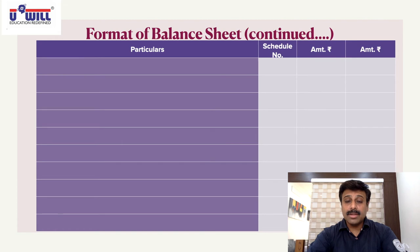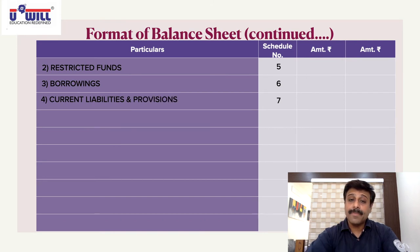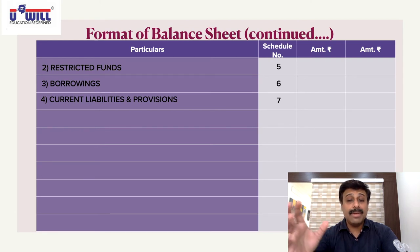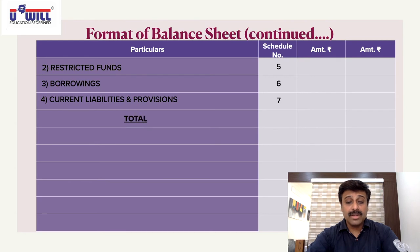After unrestricted funds, we have restricted funds (Schedule 5), borrowings (Schedule 6) — which include secured and unsecured loans — and current liabilities and provisions (Schedule 7), which include outstanding expenses, pre-received incomes, and creditors. Then we get the total of sources of funds.